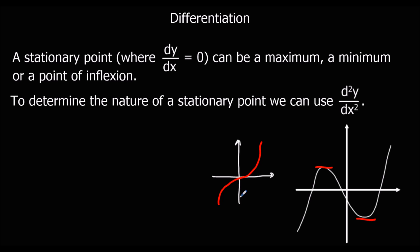We can determine the nature of a stationary point by looking at d²y/dx², which means the gradient of the gradient. If I look at a maximum point, the gradient was positive, then it was zero, then it was negative. So the gradient is going down at a maximum — the gradient of the gradient is negative. So if d²y/dx² is negative, we have a maximum.